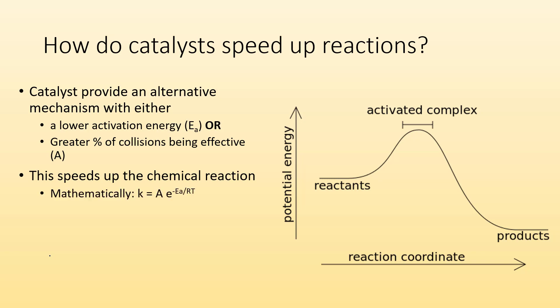Mathematically, we know that K, the rate constant, is equal to that capital A times E to the negative EA over RT. So if you lower EA, it results in a greater K. The lower the activation energy, the bigger the rate constant is going to be. Increasing A also results in a greater K. If you increase the number of effective collisions, maybe you keep things oriented right, that's going to increase our rate constant.